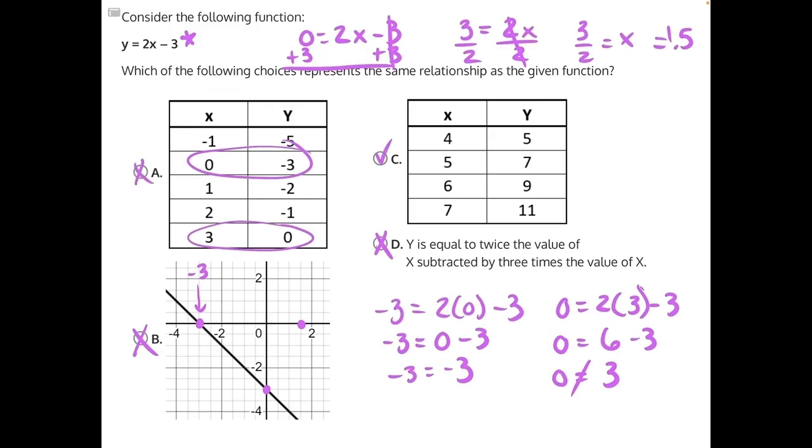And by process of elimination, answer choice C is our correct answer, but I'll still show you why C is correct. Let's start by plugging in the first set of values. Five is equal to 2 times 4 minus 3. Two times 4 will give us 8 minus 3, and 8 minus 3 is indeed 5.